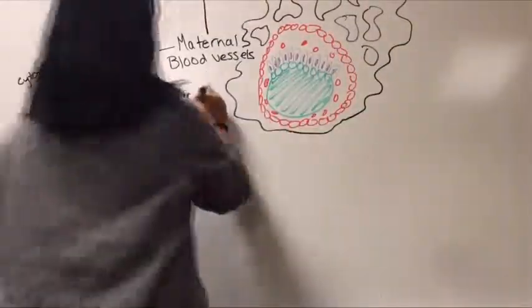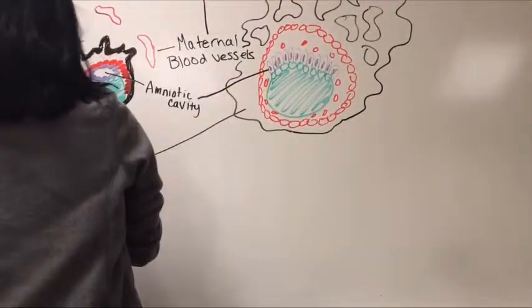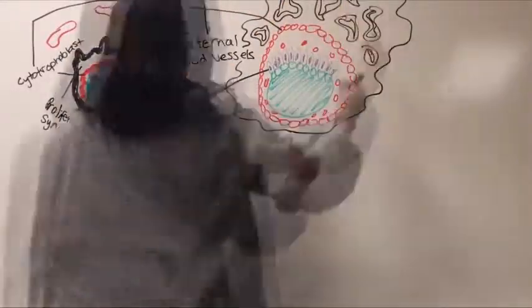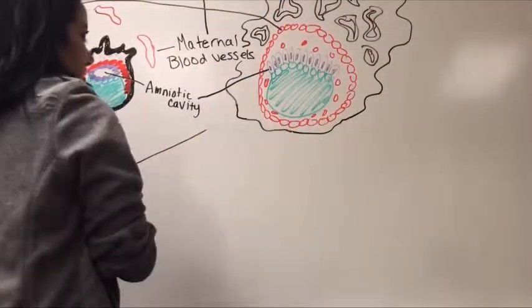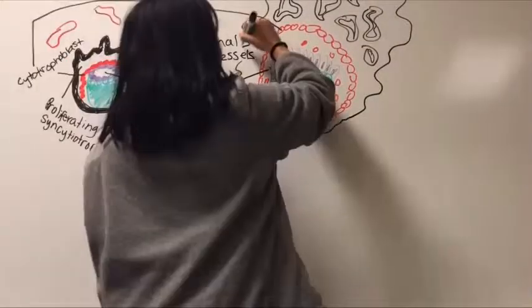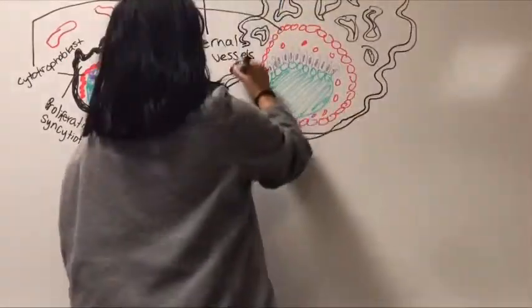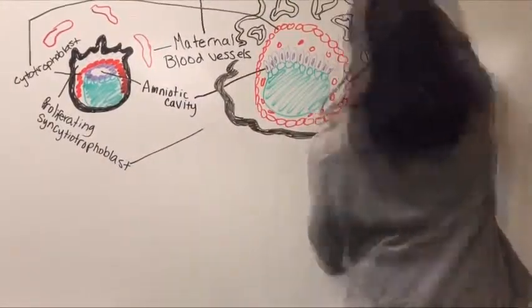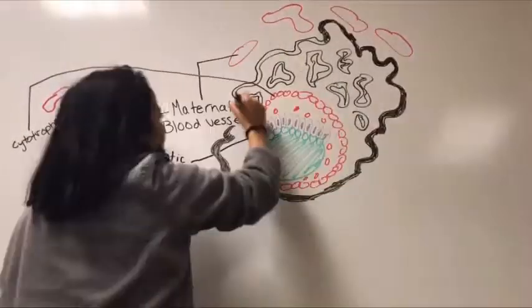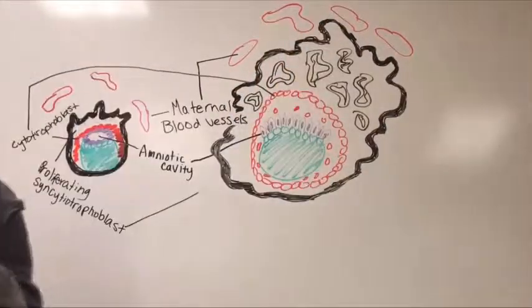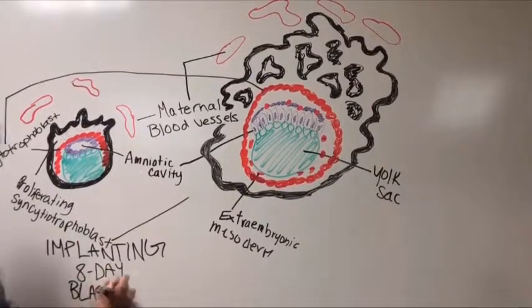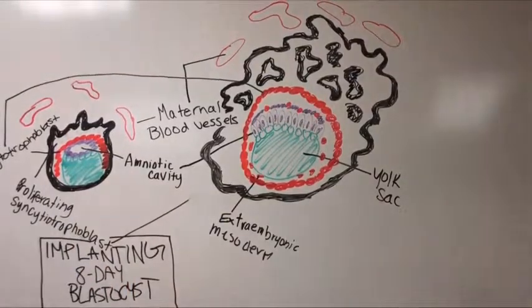The embryonic membranes that form are the amnions, which develop when cells of the epiblast turn themselves into a membranous sac. The yolk sac forms from cells of the primitive gut and arranges into a sac. And the allantois forms as a small outer packaging of the embryonic tissue.